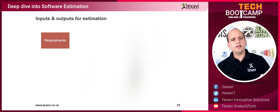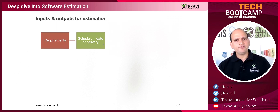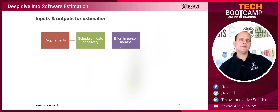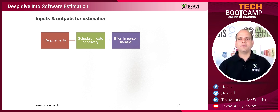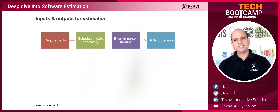What are the inputs and outputs for estimation? We've already had a discussion on this. Requirements are very important — unless you have the requirements, you would not be able to estimate. Unless you know what you're trying to build, you cannot estimate. Schedule and date of delivery, or even a proposed date of delivery, some indicative timeline from the customer, is very important. From the size you can then come up with the effort in person months, person days, or person hours.